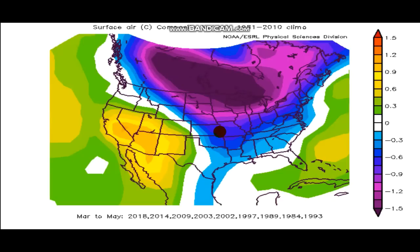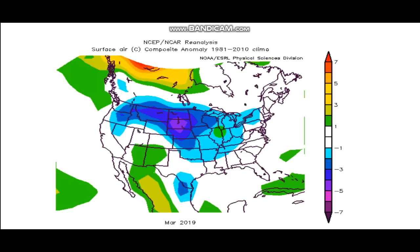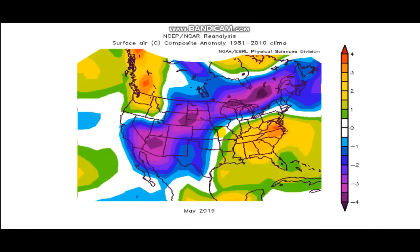I didn't show you the March through May of 2019 combined map — I should have done that but I already made this whole slideshow presentation and realized I didn't include it. So just take my word for it: it wasn't a record cold spring but it was a little bit chilly, especially across the north. Combine those three months and you could see it'll be colder across the north with generally warmer across the south.